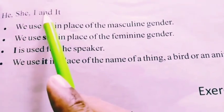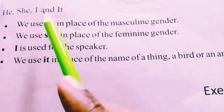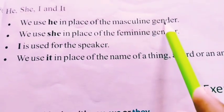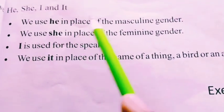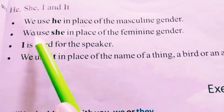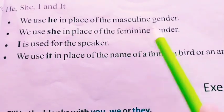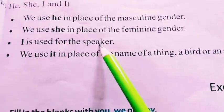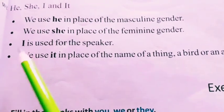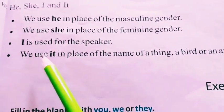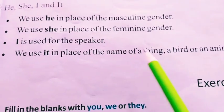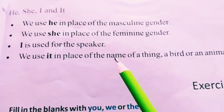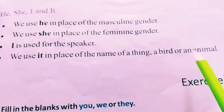He, she, I, and it. First point: we use 'he' in place of the masculine gender. Second point: we use 'she' in place of the feminine gender. Next: 'I' is used for the speaker. We use 'it' in place of the name of a thing, a bird, or an animal.